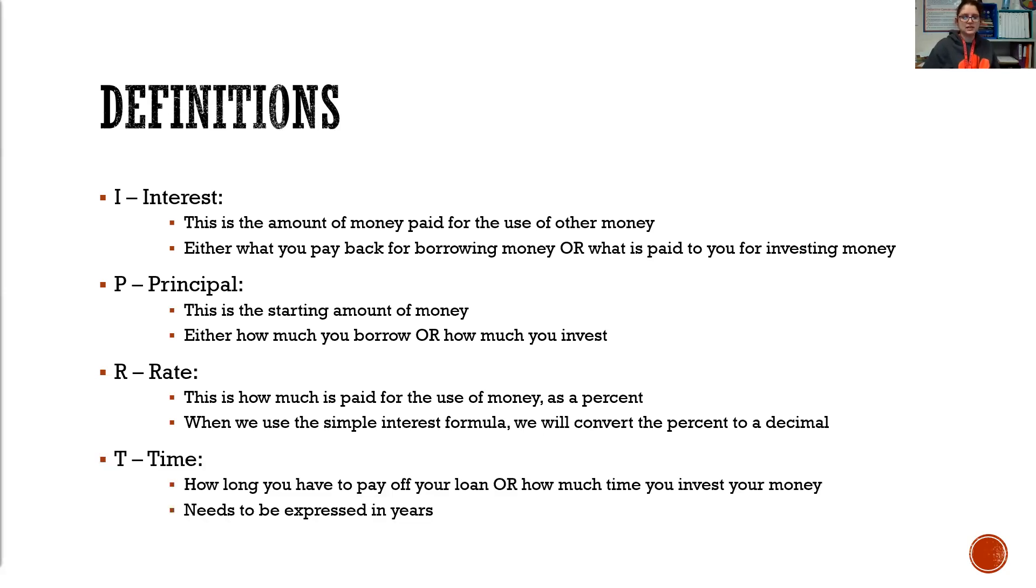And finally, T for time. This is how long you have to pay off your loan or how much time you choose to invest your money. This needs to be expressed in years and we do that by dividing if it's months by 12, if it's days by 365, that type of thing.